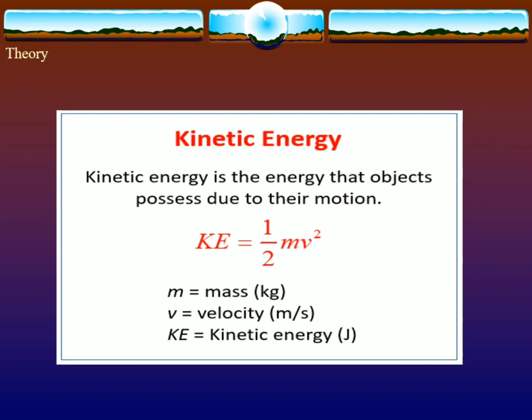Kinetic energy is the energy that objects possess due to their motion. KE equals one-half mv squared, where m is mass in kilograms, v is velocity in meters per second, and KE is kinetic energy in joules.